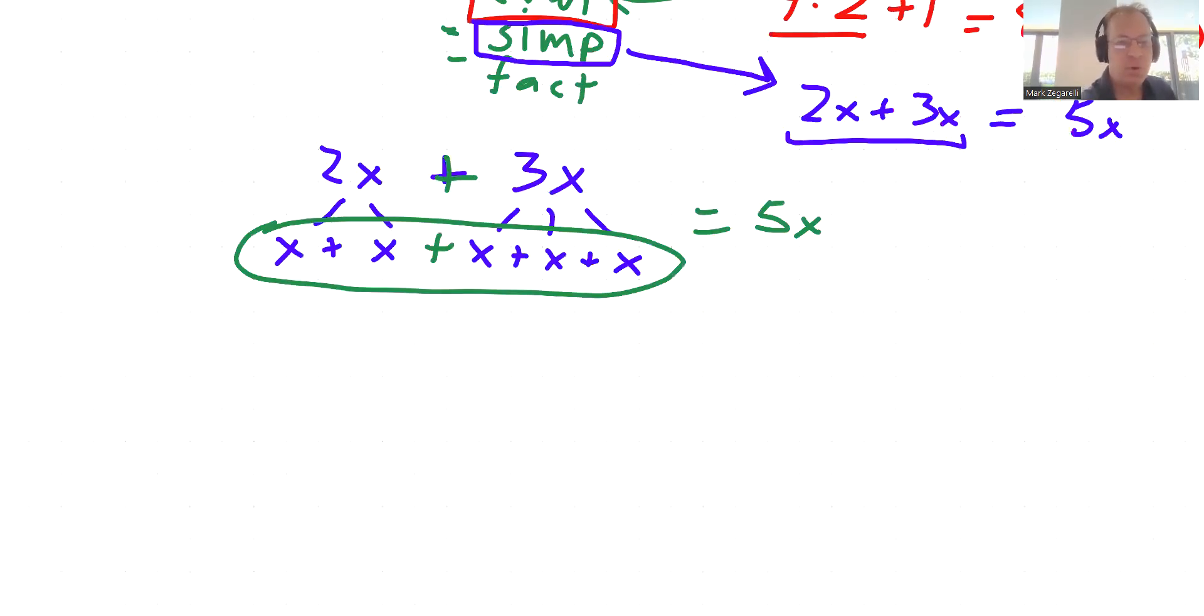So this idea of simplifying, for example, given 4x plus 6x, we just simply take these numbers and add them and keep the variable the same. So 4x plus 6x is 10x.